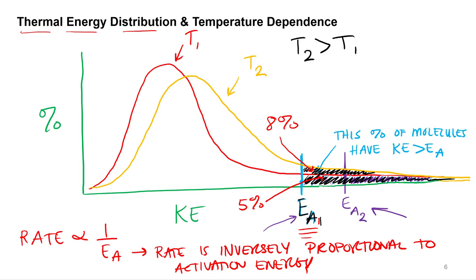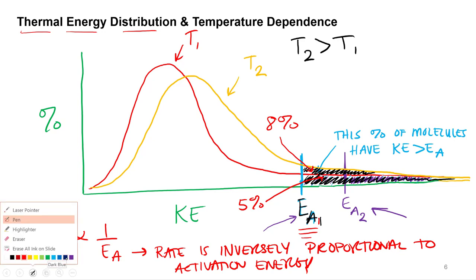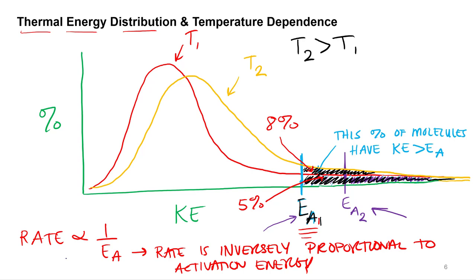With the additional molecules from the orange line, let's say eight percent have enough kinetic energy to overcome the activation barrier. If more molecules have enough kinetic energy, does that increase or decrease the rate? It increases the rate. So if we increase the temperature, we increase the number of molecules with enough kinetic energy and increase the rate. That is a directly proportional relationship.